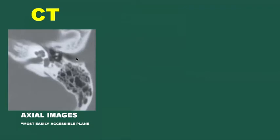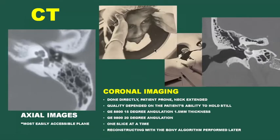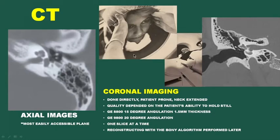In the early 80s, high-resolution CT became available, and axial images were the most easily accessible plane, which required us to learn our anatomy in a completely different projection. Coronal images were done directly, often with the patient prone and neck extended, and the quality depended on the patient's ability to hold still. Our GE 8800 provided 15 degrees of additional gantry angulation, and our GE 9800 provided 20 degrees. CT sections back then were performed one slice at a time, and the reconstruction with the bony algorithm was performed later.